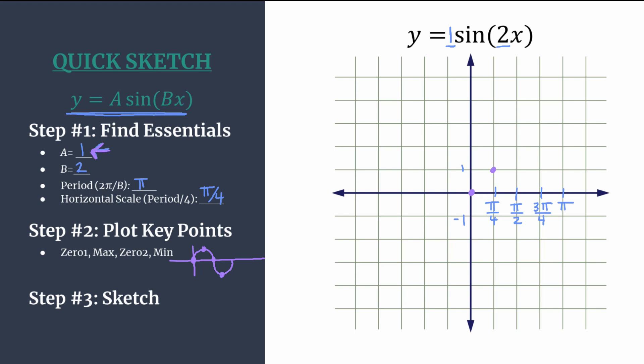So we have zero and maximum. Zero at the second point happens at pi over 2. And then the minimum will have a y value that's just the opposite value of A, so negative 1. And then you would repeat.